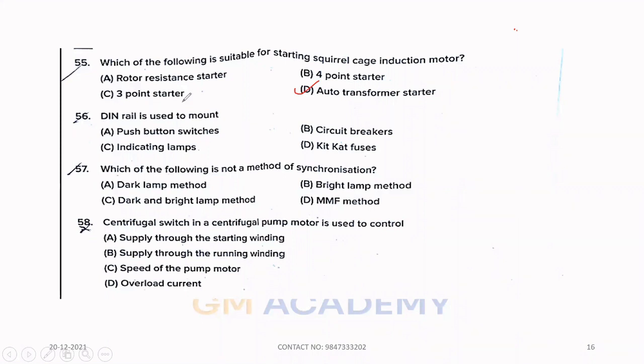Fifty-six. DIN rail is used to mount. Option B, Circuit breakers. Fifty-seven. Which of the following is not a method of synchronization? Option D, MMF method. Fifty-eight. Centrifugal switch in a centrifugal pump motor is used to control. Centrifugal switch disconnects the auxiliary winding at 70 to 80% speed. So, option C, speed of the pump motor.